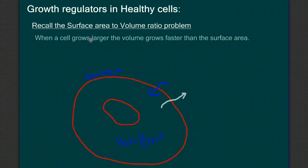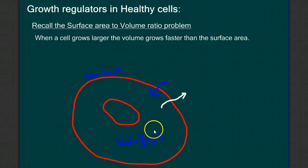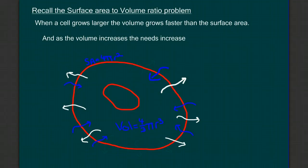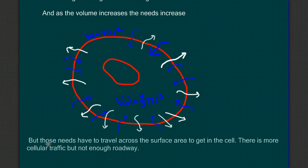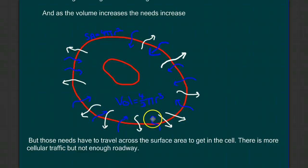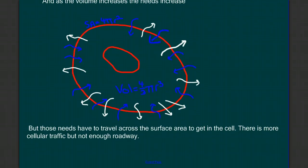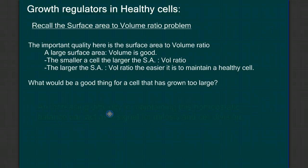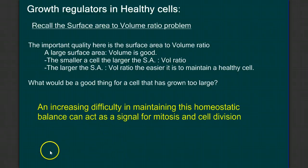As a cell grows larger, its volume will grow faster than its surface area, because volume is a cubic function and surface area is a squared function. As volume increases, the needs increase — we have to move more things in and more things out of the cell. But these needs have to travel across the surface area to get in. There's more cellular traffic, but not enough roadway to handle it. This is one of the reasons cells are limited in size. The key issue is the surface area to volume ratio. Any cell that's gotten too large and is struggling to maintain homeostasis — mitosis and cell division would be a good solution, and this increasing difficulty in maintaining homeostatic balance can be one of the signals for mitosis and cell division.